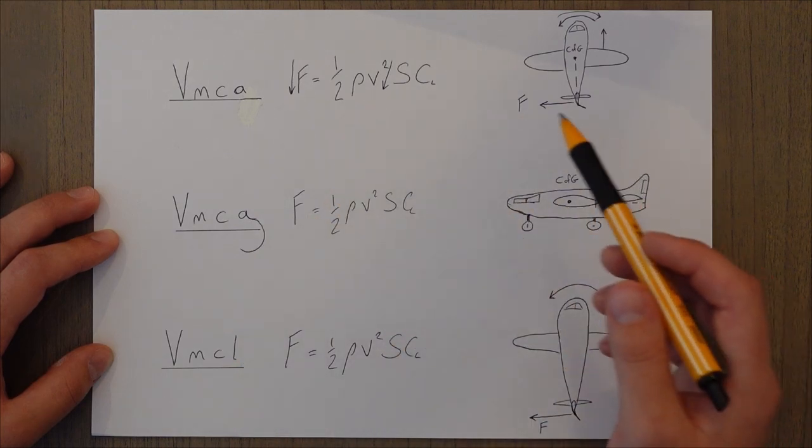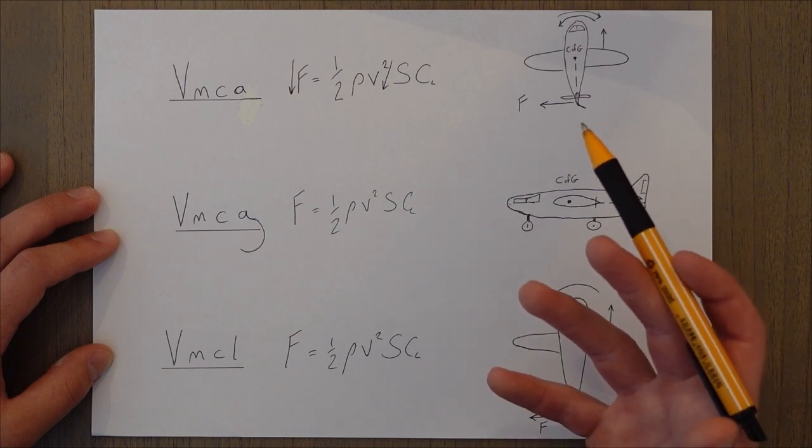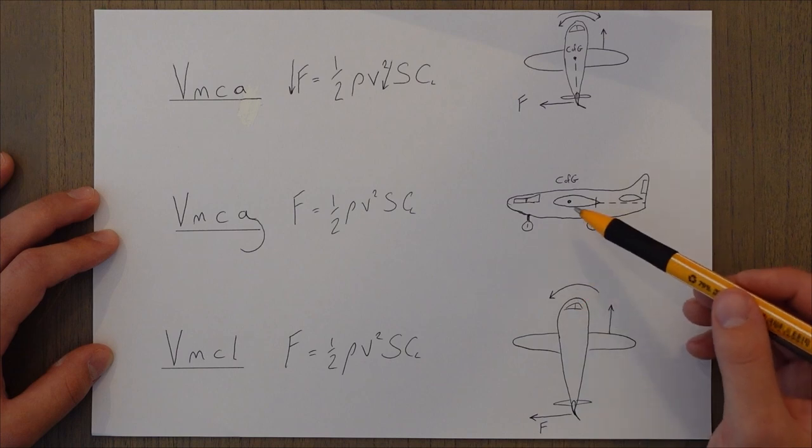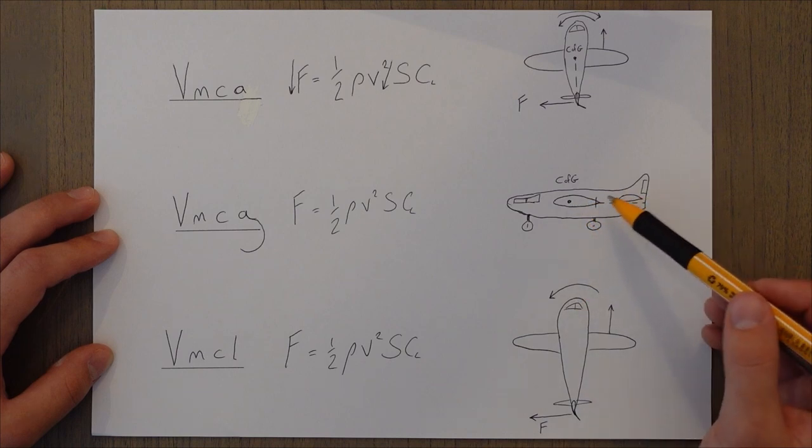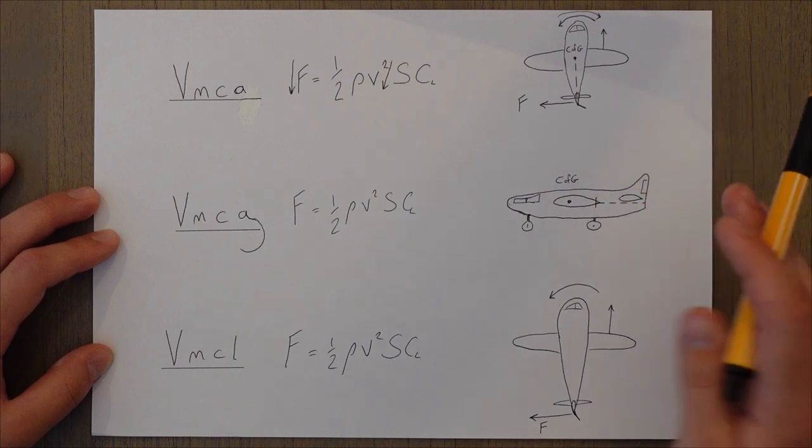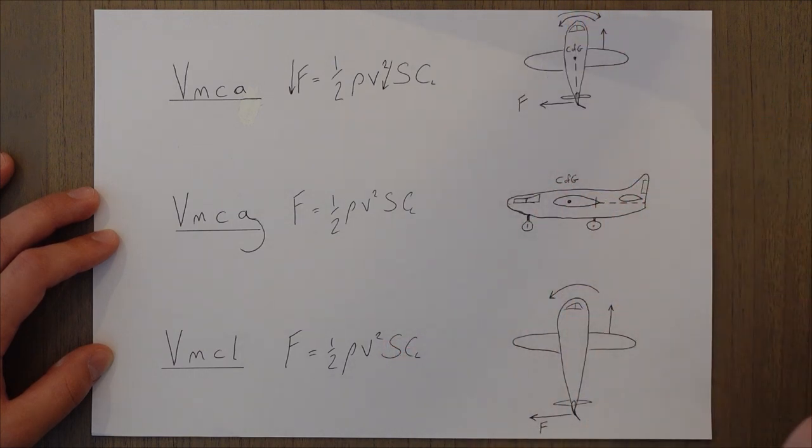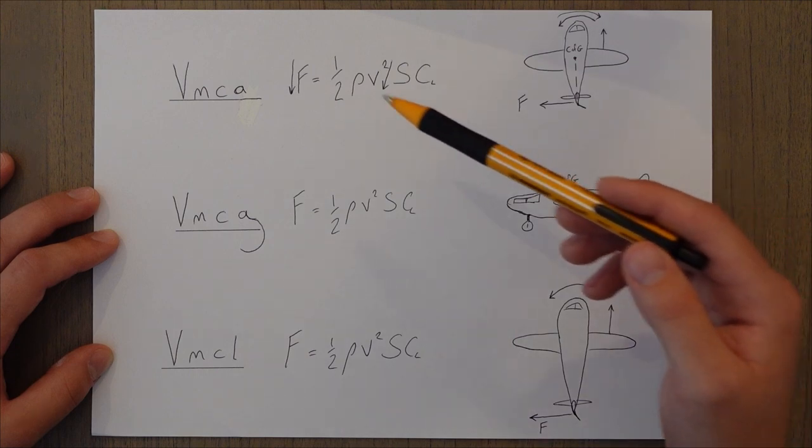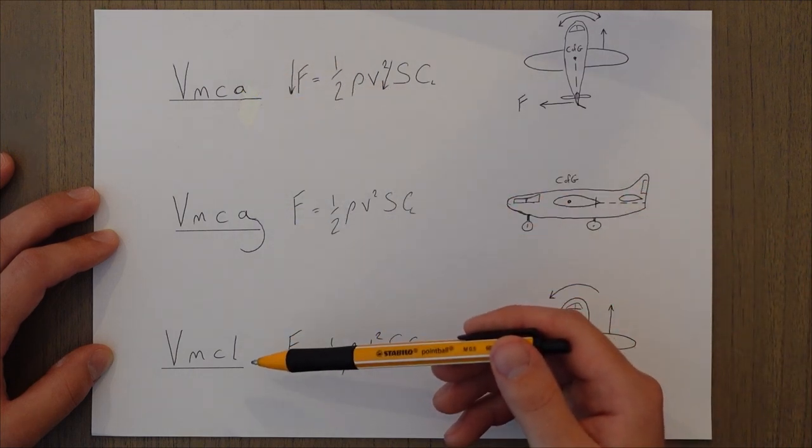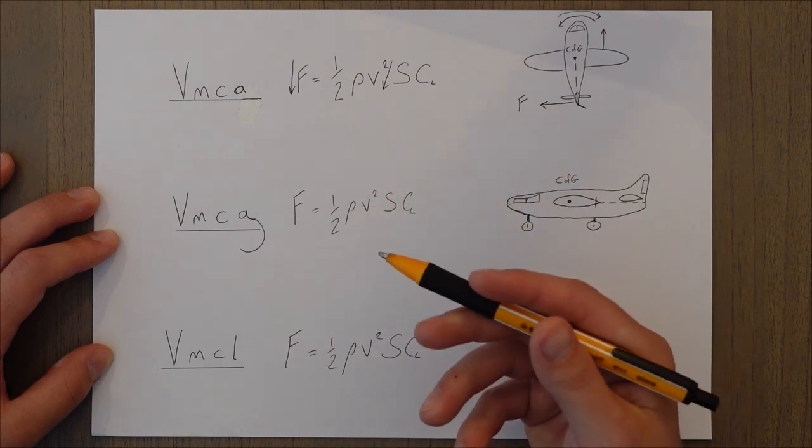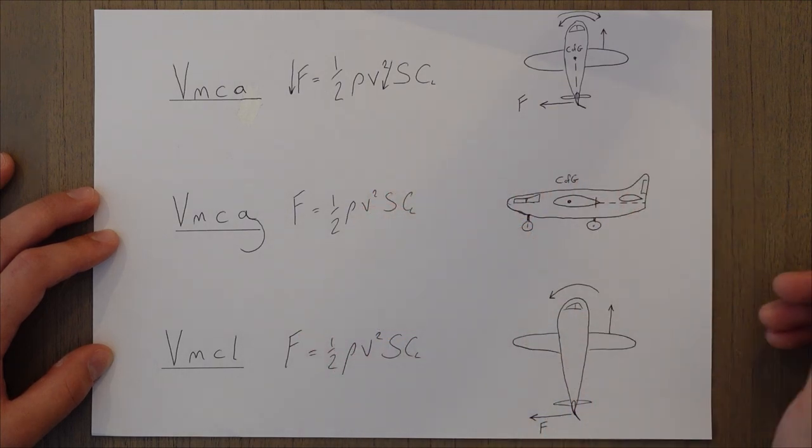It's important to note that all of these speeds are determined at the worst possible conditions. So it's considering the critical engine has failed. The center of gravity is at the rear limit, meaning the balance arm is short. We're at max weight, so we have to be using maximum thrust which will cause the biggest strength of moment. A windmilling propeller in the case of a propeller driven aircraft. And with two speeds, the VMCA and VMCL, they also allow a five degree bank angle to help with the directional control, that method that we saw earlier on.